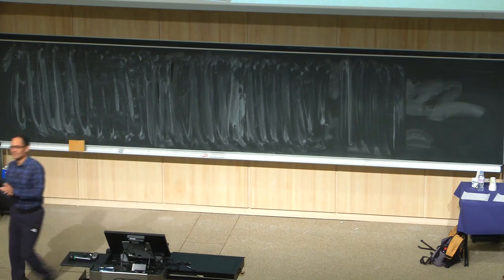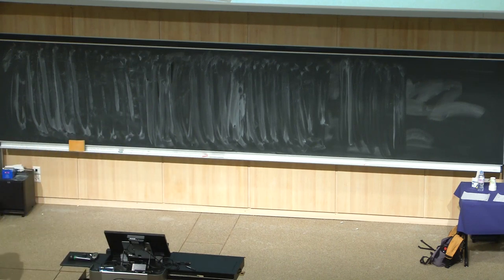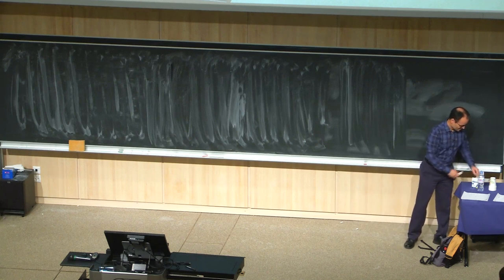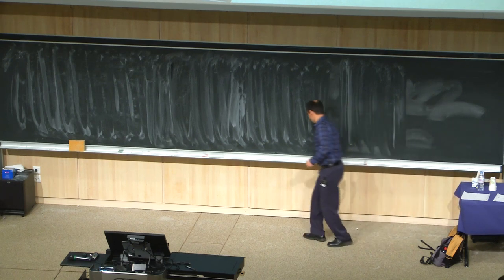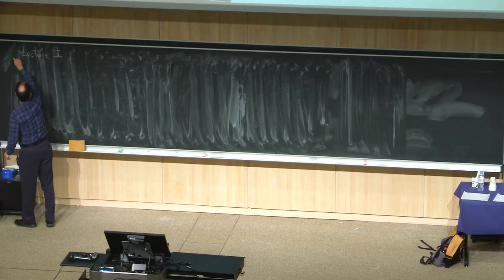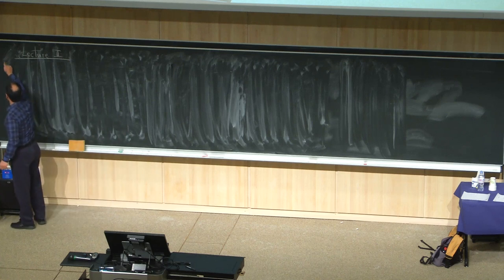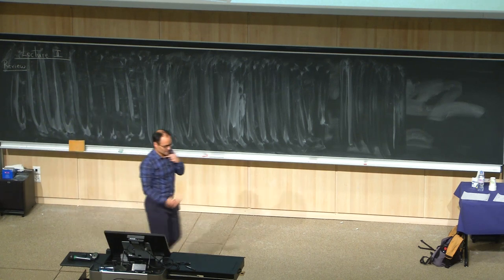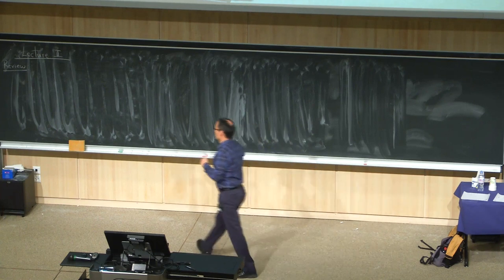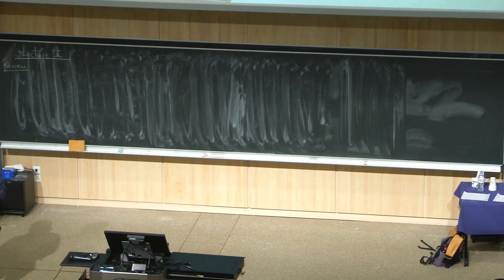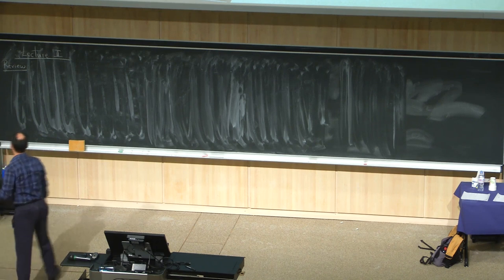All right, let's start lecture number two with a brief review of what we did yesterday. We decided to study scattering amplitudes. The strategy is going to be to simplify as much as we can every structure that can appear in the scattering amplitude. The first kind of structure is the kinematics, the second is the dynamics.